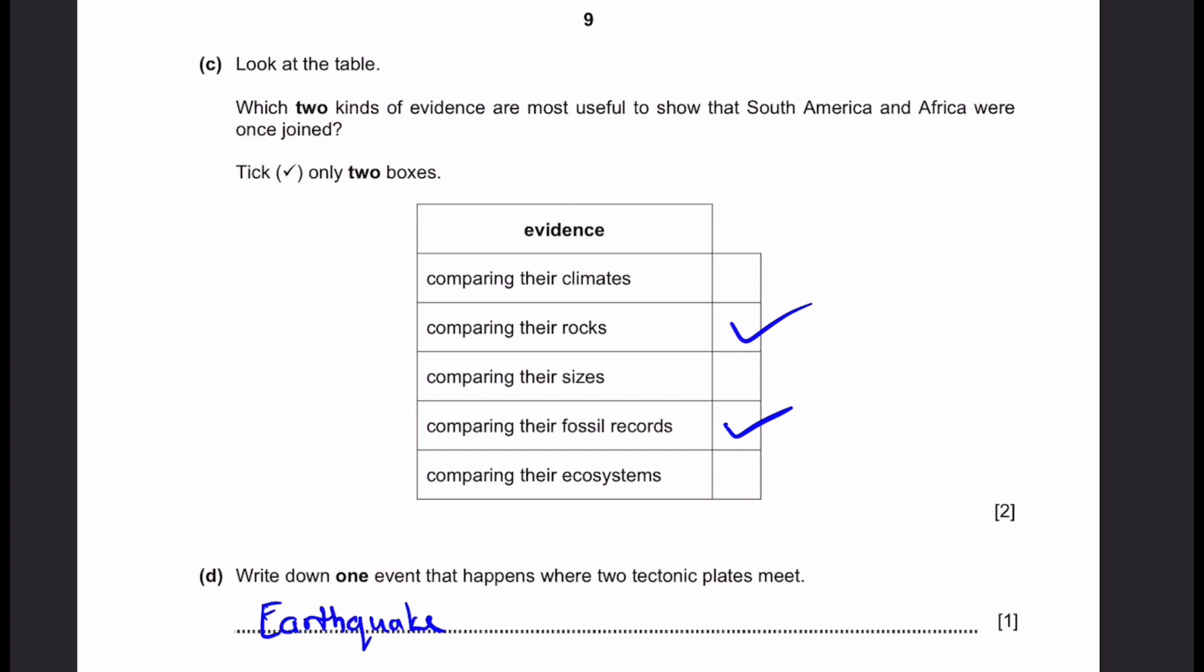Part D: Write down one event that happens when two tectonic plates meet. You can write earthquake, which I've written, or you can write a tsunami, or you can write a volcanic eruption. I've written earthquake. That would be our answer.